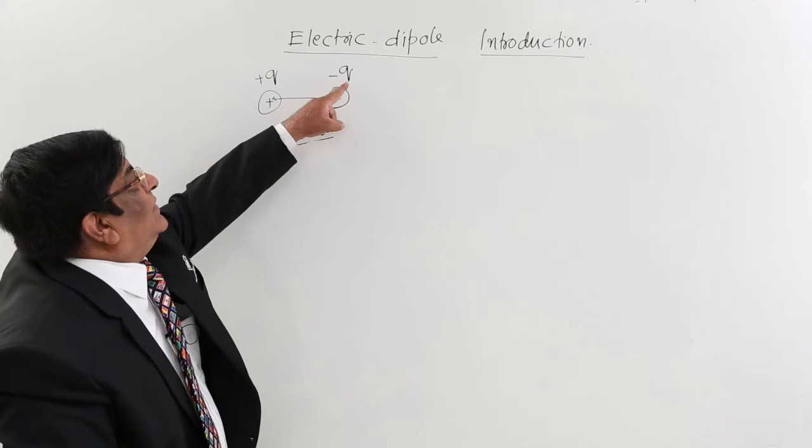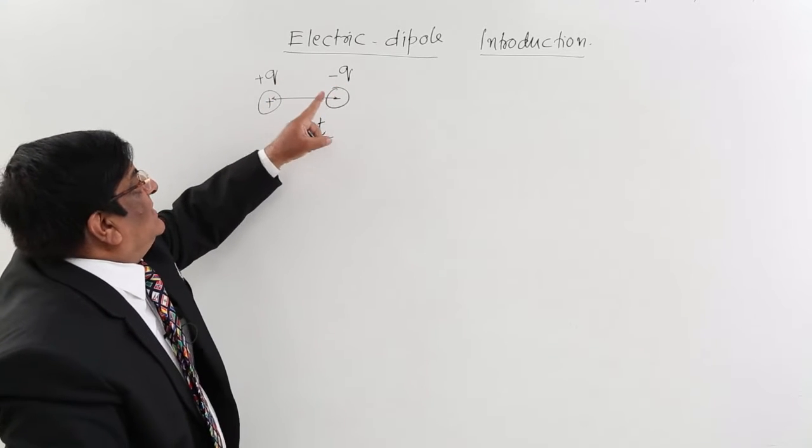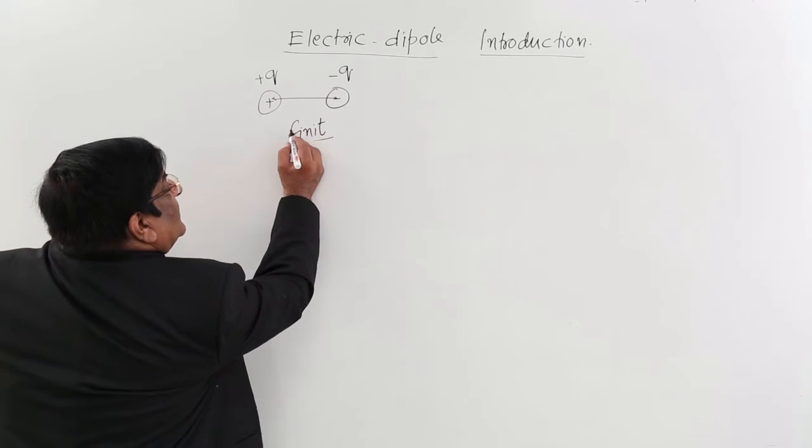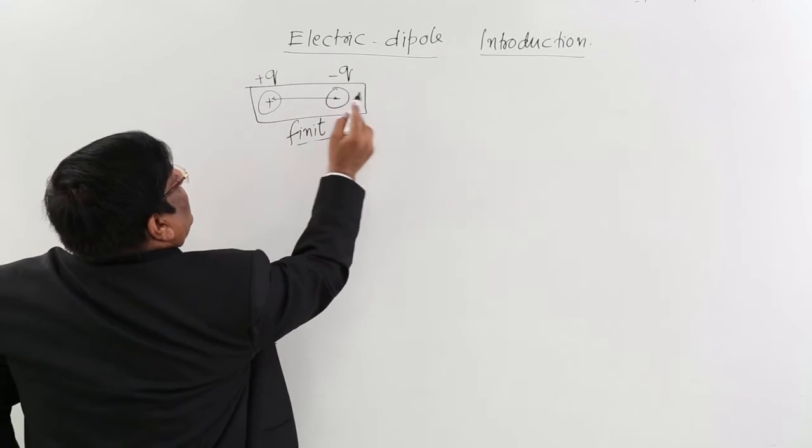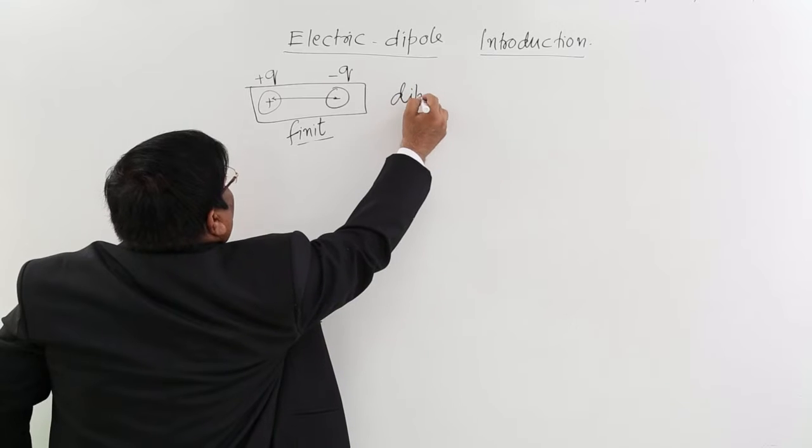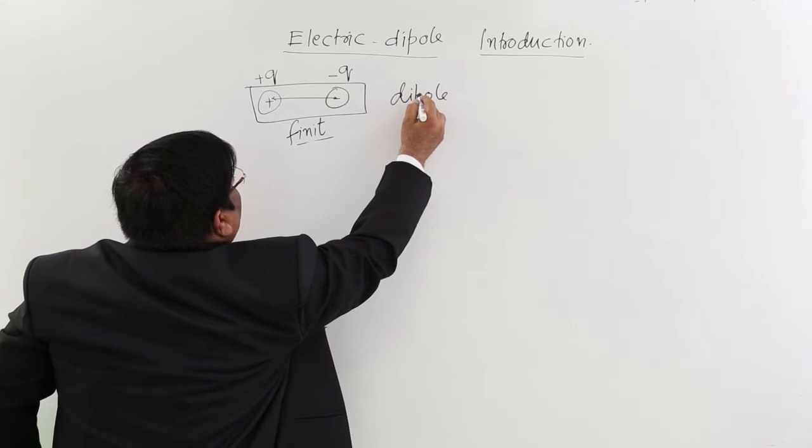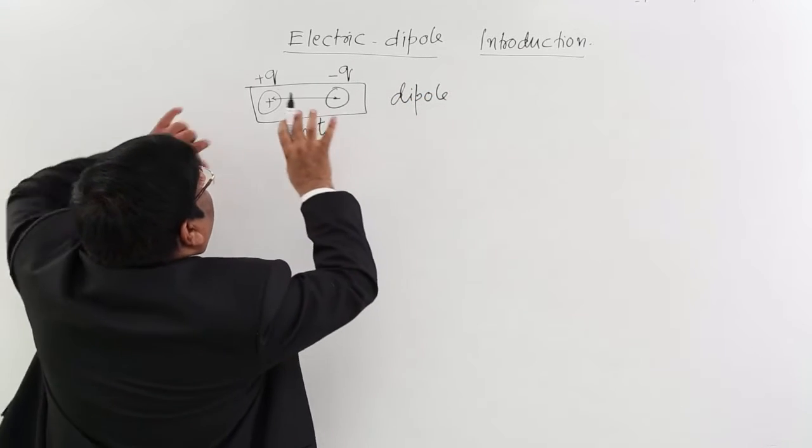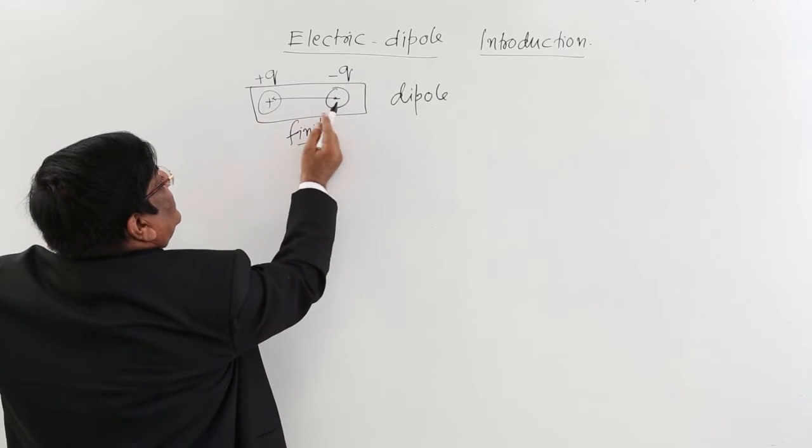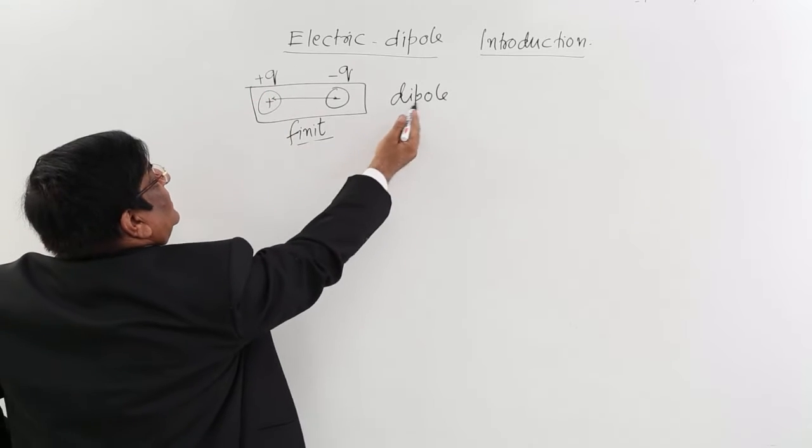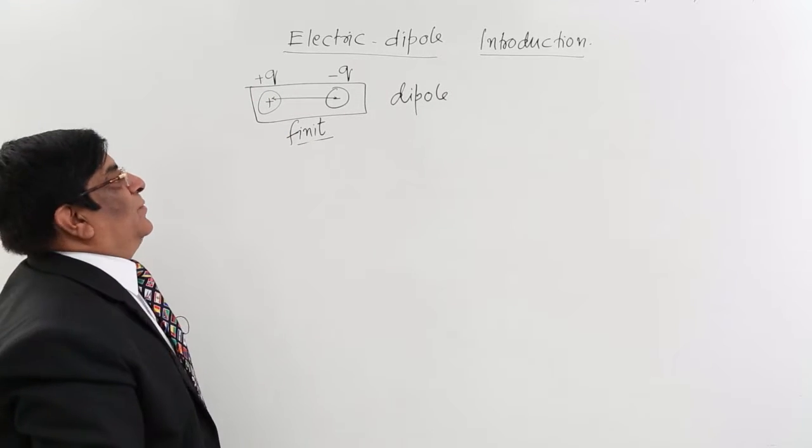there are two equal and opposite charges fixed at a finite distance. Then this system will be known as a dipole. Dipole means two; pole means opposite nature particles. These are two opposite nature particles at the two corners, therefore this is known as a dipole.